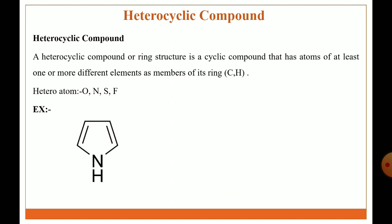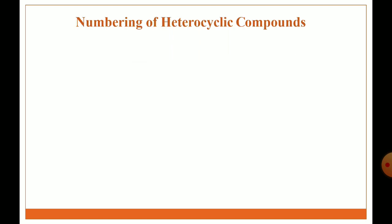Example of heterocyclic compound: this is a five-member heterocyclic ring containing nitrogen as a heteroatom — name is pyrrole. The second example is a five-member heterocyclic ring containing two heteroatoms, that is nitrogen — name is pyrazole.